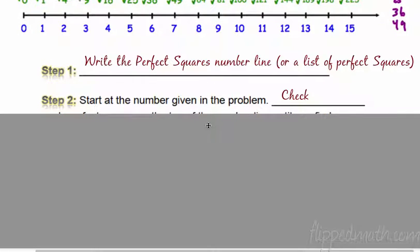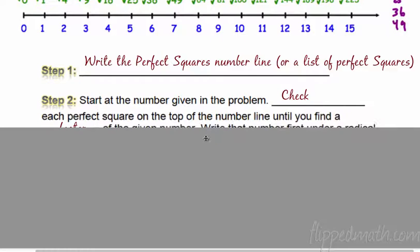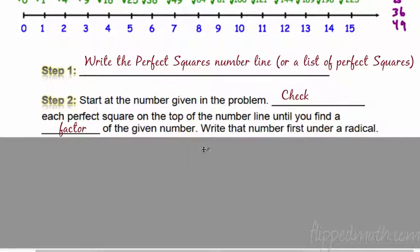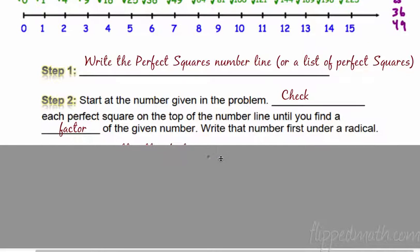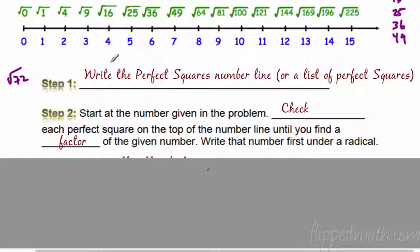Step 2: start at the given number — the number they give you in the problem — and check each perfect square on the number line, or in your list, until you find a factor of the given number. Write that number first under a radical. Let's go through a problem. Throw out a square root: 72. We want to simplify the square root of 72. Step 1 — write the perfect squares number line, we did that. Is 72 on the number line? No, because if it was, it just simplified, like square root of 64 is 8.